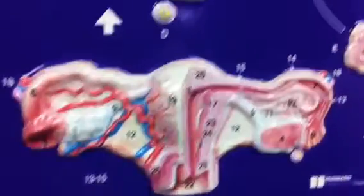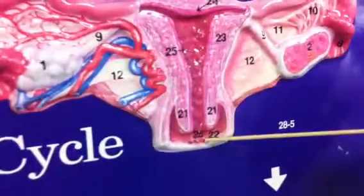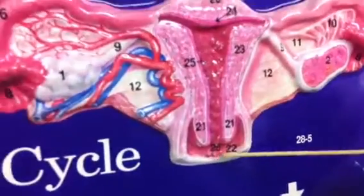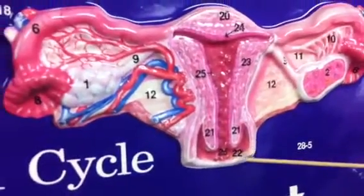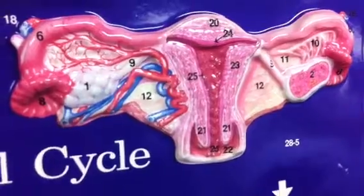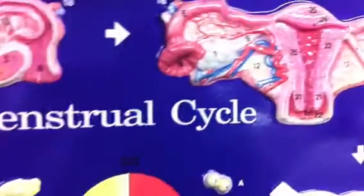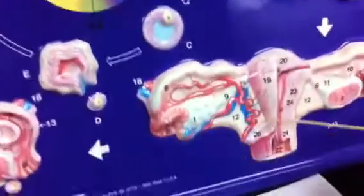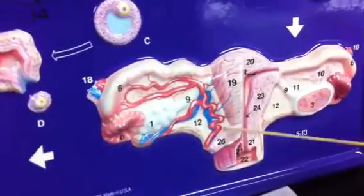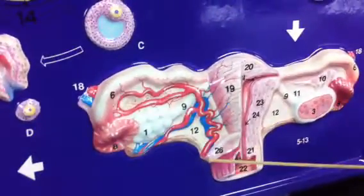Twenty-five, menses is occurring. Twenty-six is the uterosacral ligament.